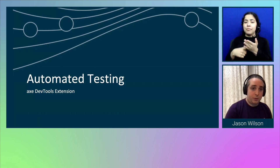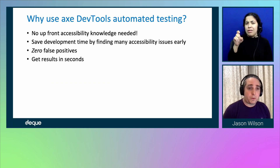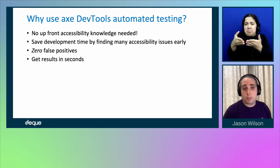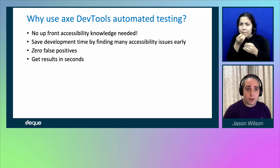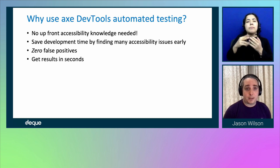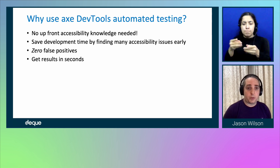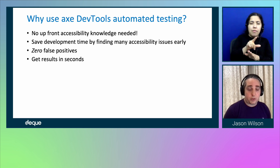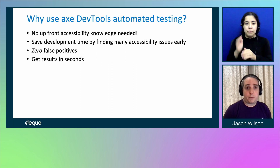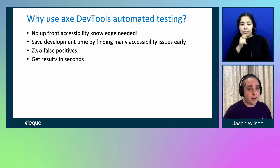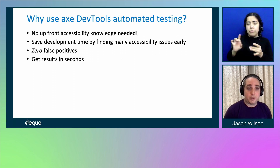Let's talk about automated testing with the Axe DevTools extension. Why use it? It's built right into your browser with no upfront accessibility knowledge needed. You can save a lot of development time by finding many accessibility issues early — just pull up the extension, run a quick scan, and get results back in seconds. It's built on Axe Core, so we strive for zero false positives.